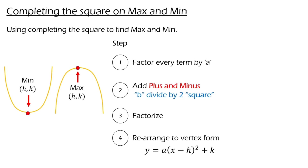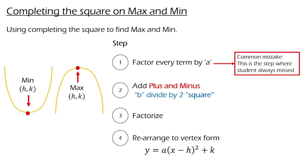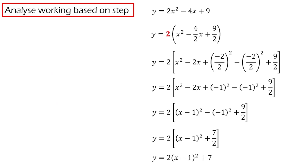In general, there are four steps in using completing the square to find the maximum or minimum point of a quadratic equation. The first step is to factor every term by a — please take note, this is a step that students always miss. The second step is we add plus or minus b divided by 2, squared. The third step is to factorize, and finally we rearrange it into the vertex form. Let's take a look at a typical working solution.